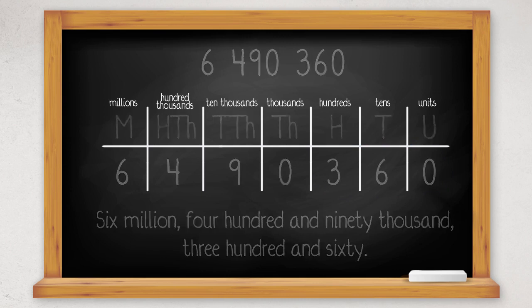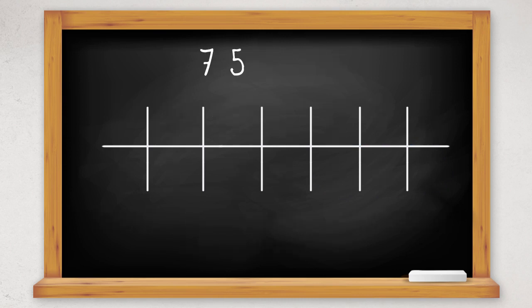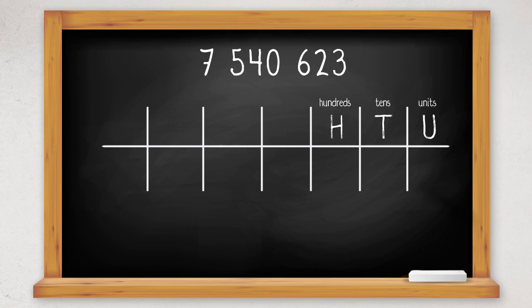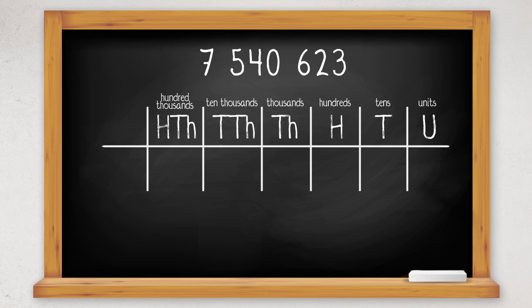So let's look at the number 7,540,623. Use place value headings to help you find the value of each digit: units, tens, hundreds, thousands, tens of thousands, hundred thousands, and millions.